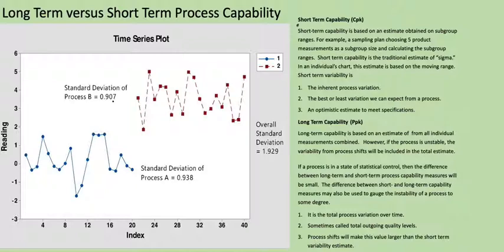Short-term capability actually tries to estimate the true variability of the process without these kinds of shifts or instabilities. The way it does that is either through subgrouping — you take a sample of size 5, calculate the subgroup average and range, and then use that range to calculate an estimate of the standard deviation or sigma hat. Or if you're using an individuals chart, you might use the moving range.